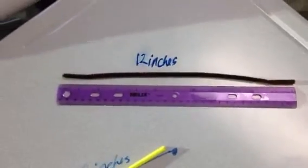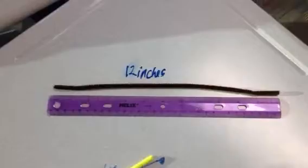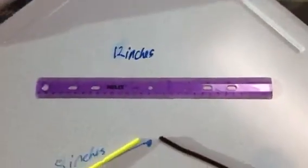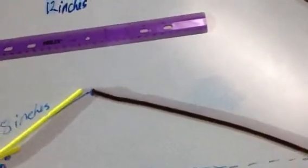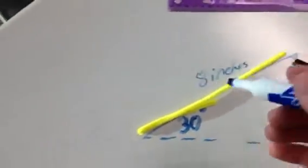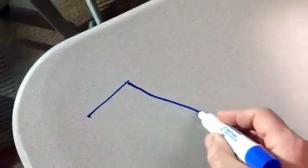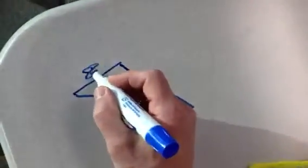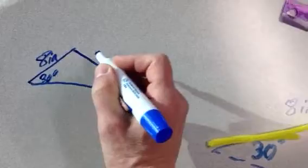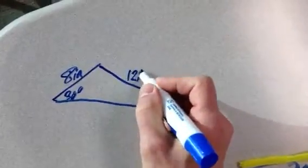Then you have a 12 inch pipe cleaner and you're going to make as many triangles as you can. Here we have one triangle and I'm just going to list it over here. It has 8 inches here, 30 degrees, and 12 inches.